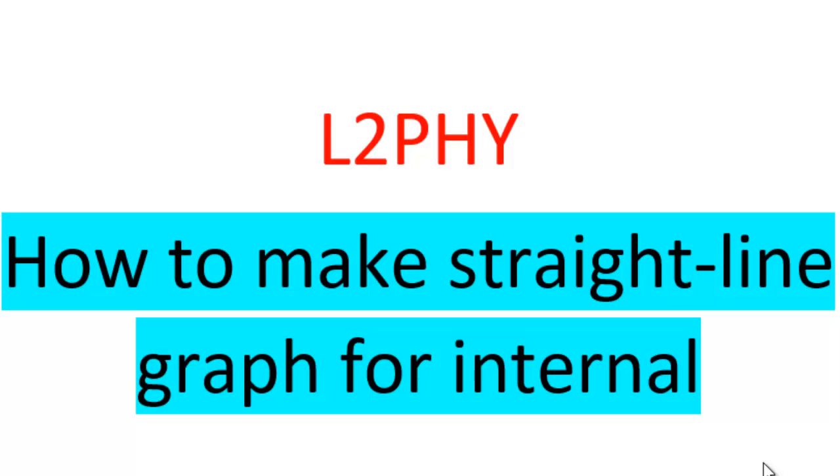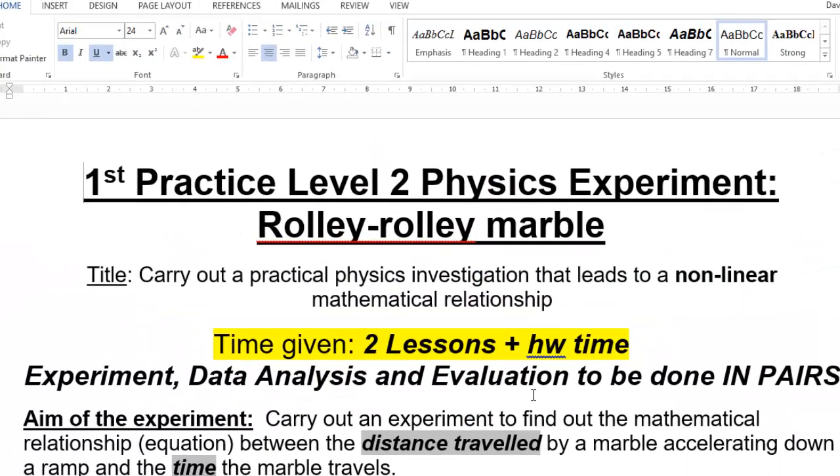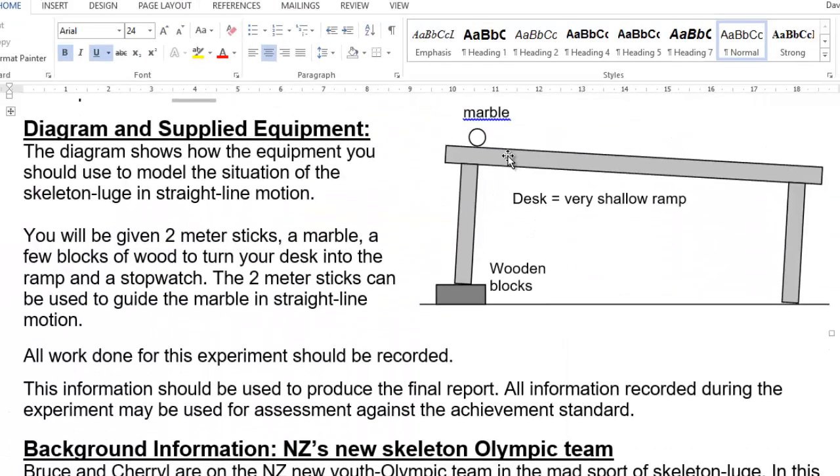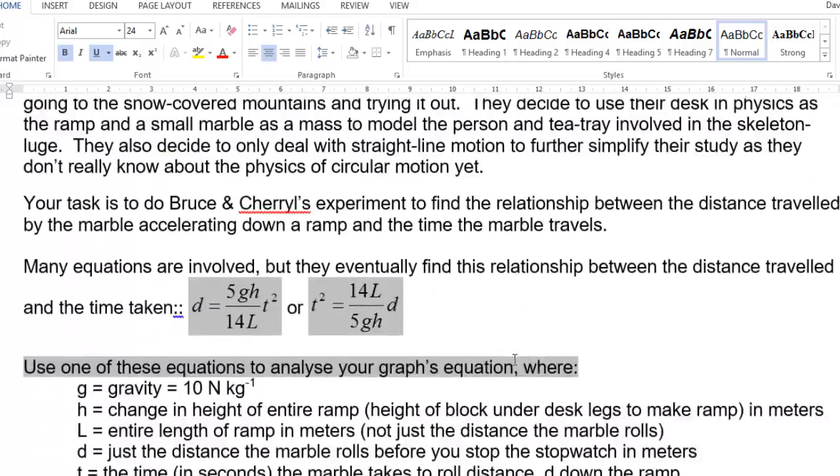Okay, here we go. Level 2 physics, how to make a straight line graph for your internal experiment. This video will cover how to make a graph from this experiment, where you rolled the marble down the desk and you had lots of different times for different distances.